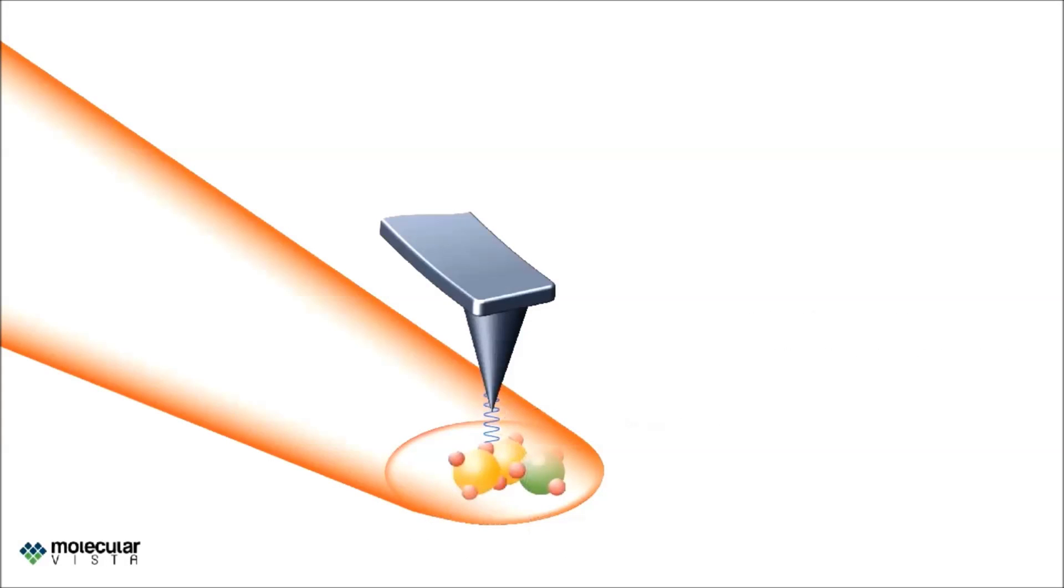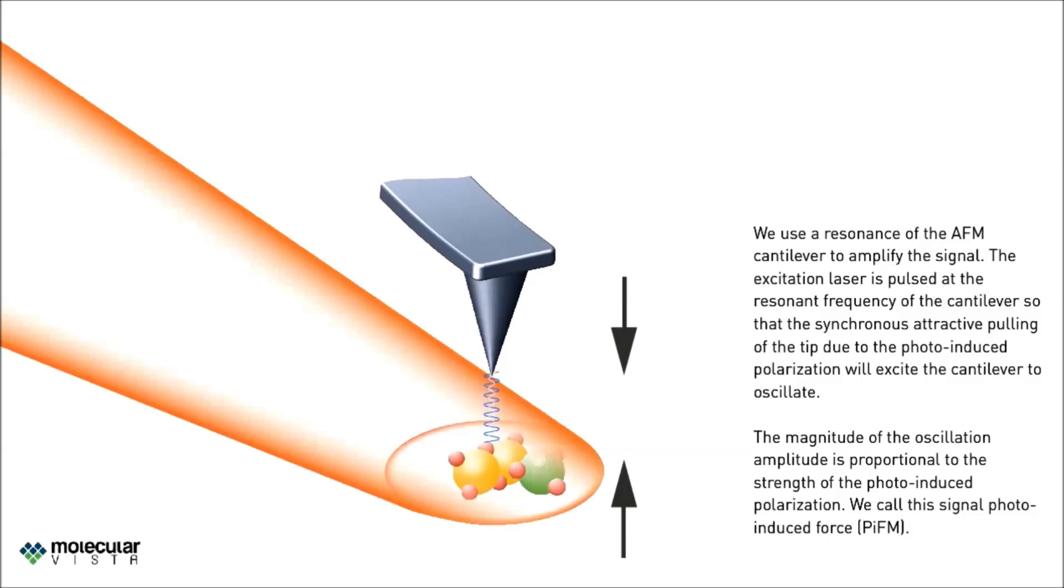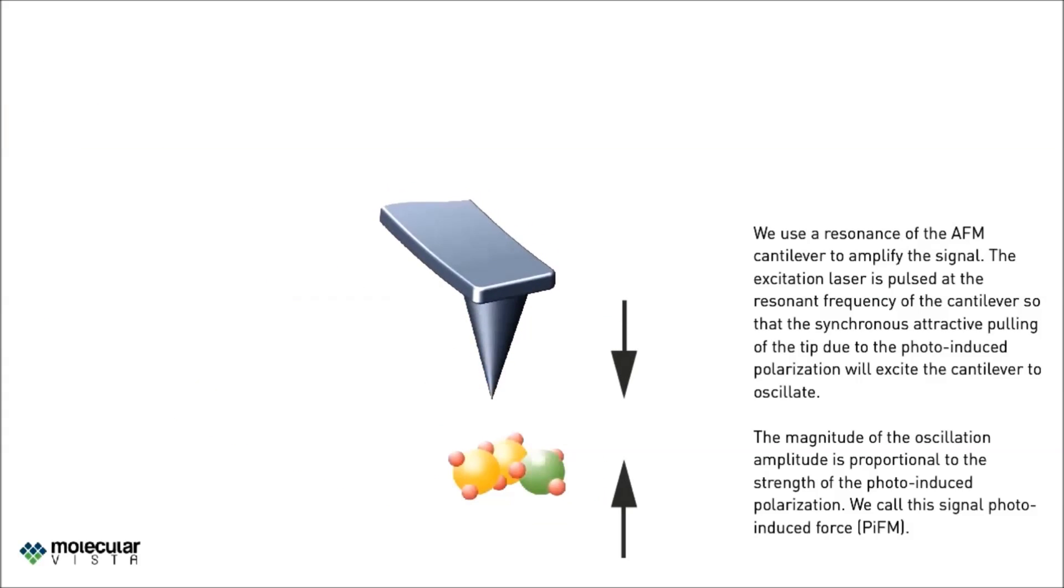We use a resonance of the AFM cantilever to amplify this small signal. To do so, we pulse the excitation laser at the resonant frequency of the cantilever so that the synchronous attractive pulling of the tip due to the photo-induced polarization will excite the cantilever to oscillate. The magnitude of the oscillation amplitude is proportional to the strength of the photo-induced polarization.